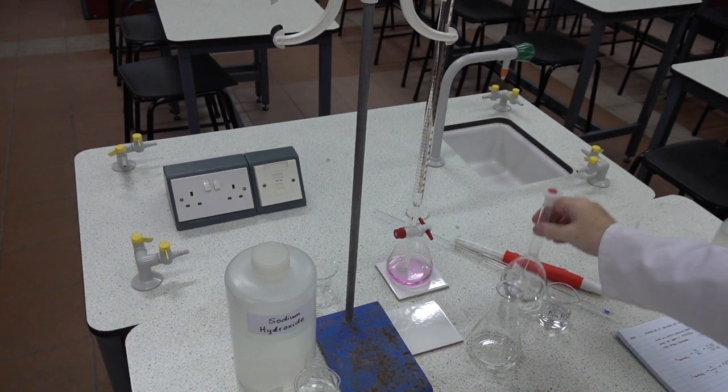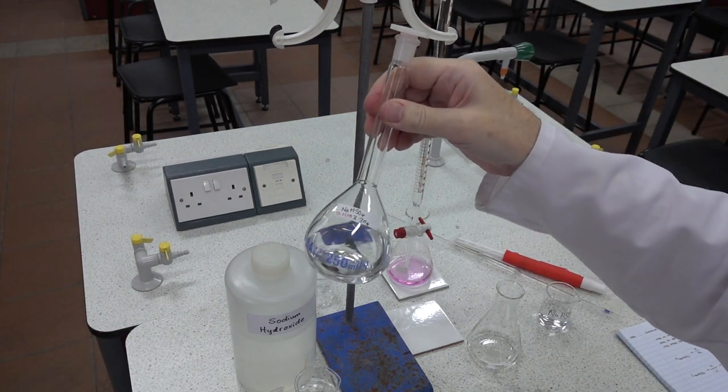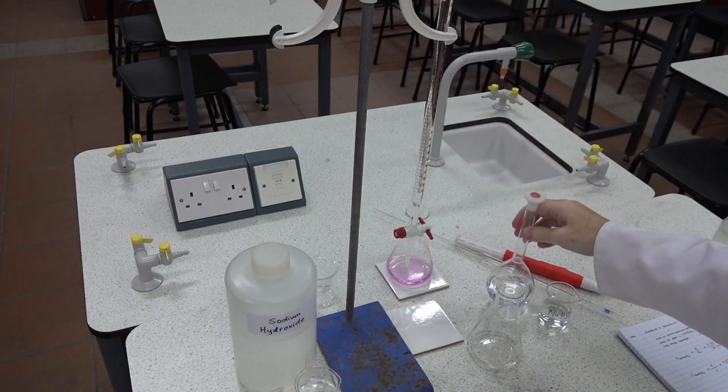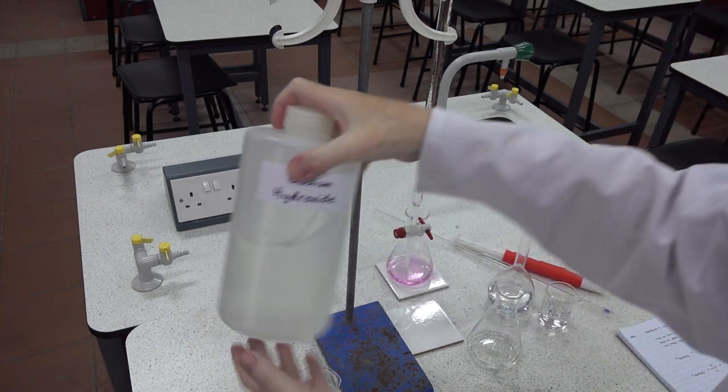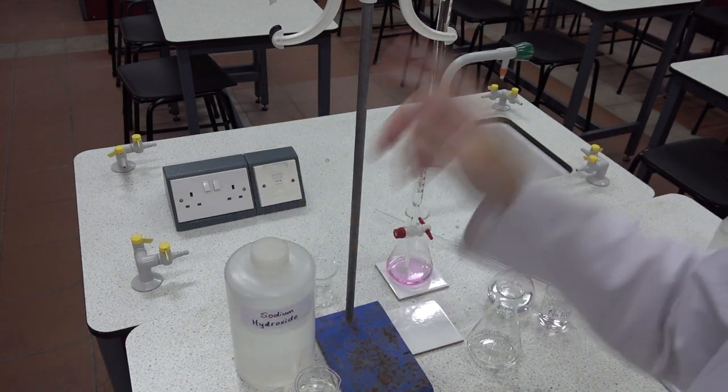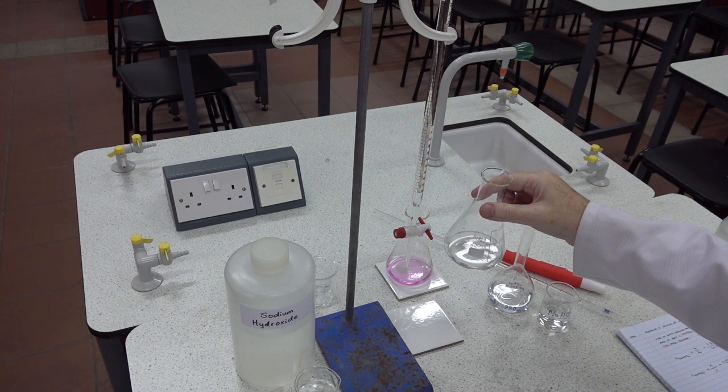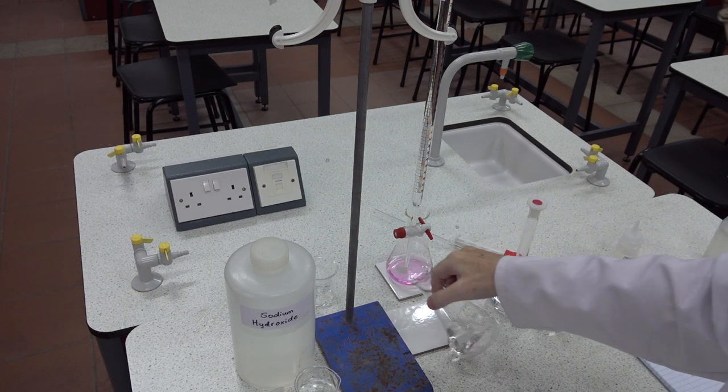In this experiment we're going to titrate sodium hydrogen sulfate solution that we prepared previously and is 0.11 molar against sodium hydroxide of unknown concentration. The sodium hydroxide is in the burette and we've already pipetted 25 centimeters cubed of sodium hydrogen sulfate into the conical flask.